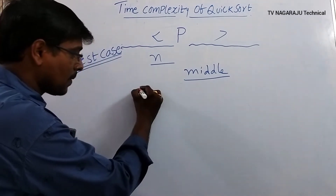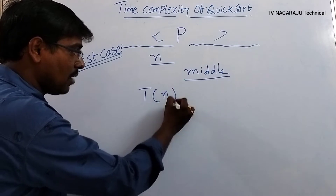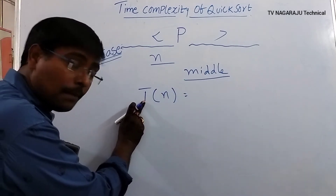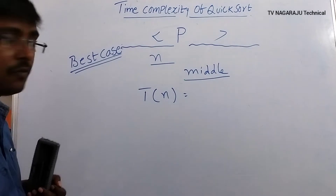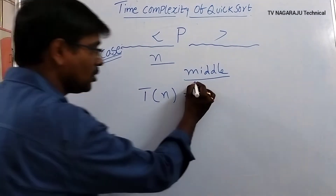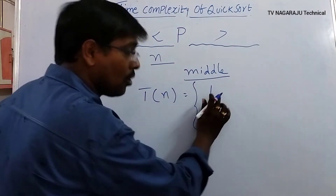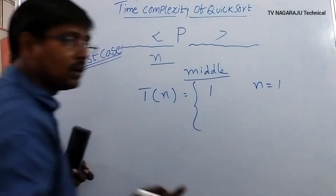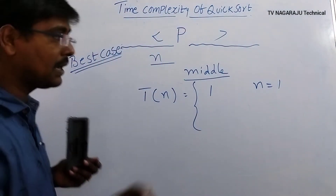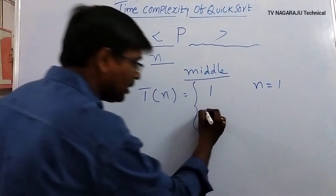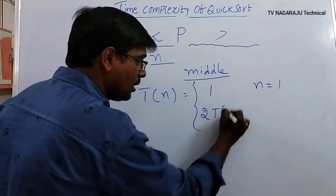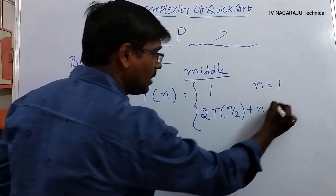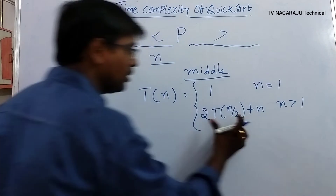In this case, the time complexity T(n) is equal to 1 when n equals 1 — meaning no comparisons are needed. For n greater than 1, T(n) = 2·T(n/2) + n.